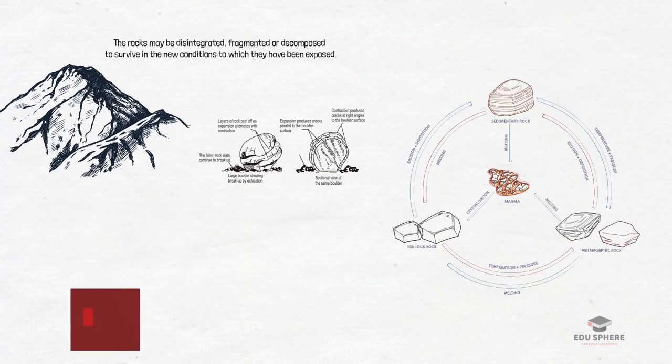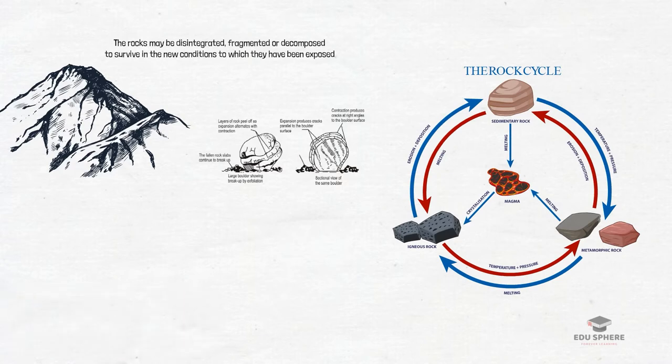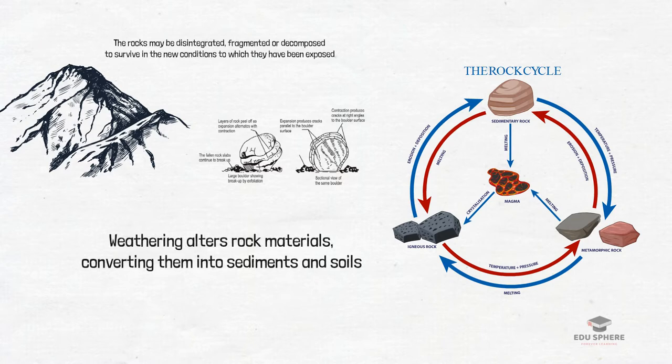Weathering is one of the major processes in the rock cycle and it is the first step in flattening the mountains that have been uplifted by endogenic processes. It shapes the earth's surface topography and alters rock materials, converting them into sediments and soils.